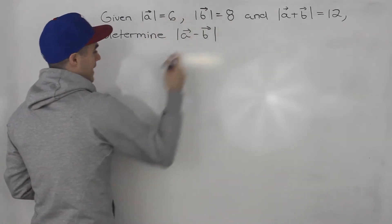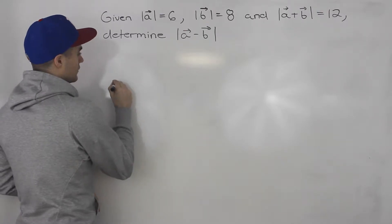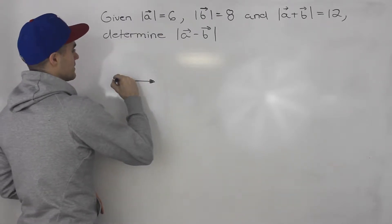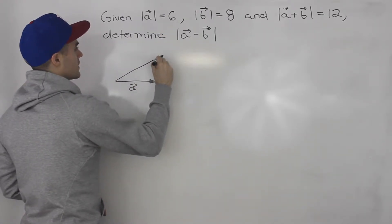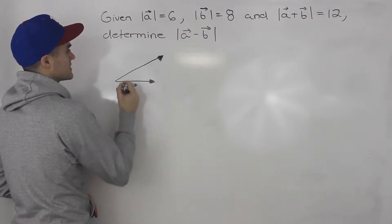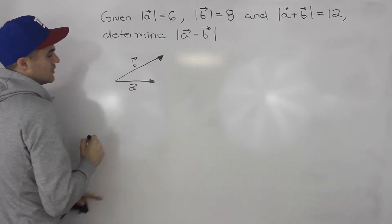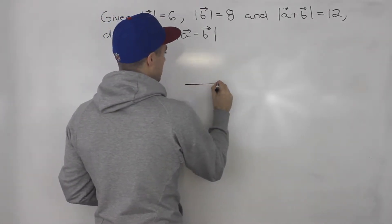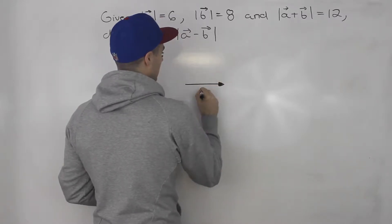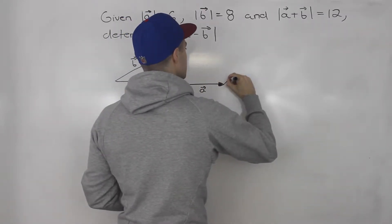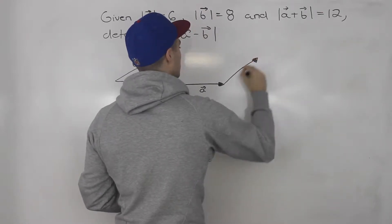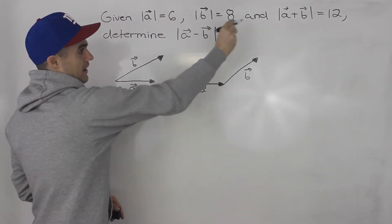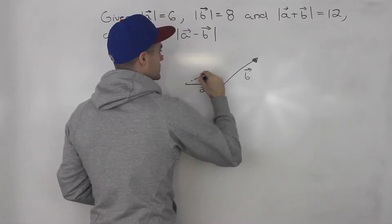Notice we have a, b, and a plus b. Let's first draw vector a — let's say this is it right here — with a magnitude of 6, and then let's draw vector b. Both of these right now are tail to tail. If we add these, we would have vector a plus vector b, and vector a plus b would be the resultant vector here.